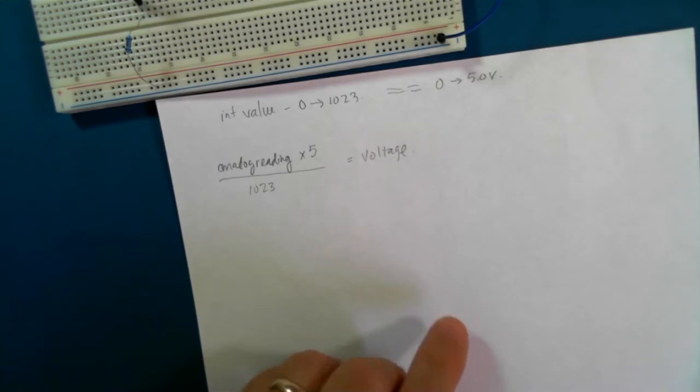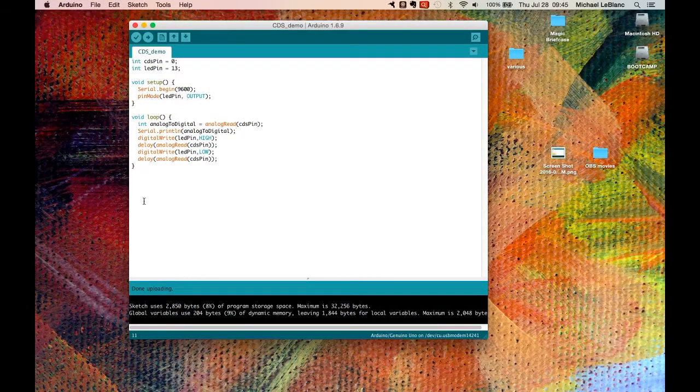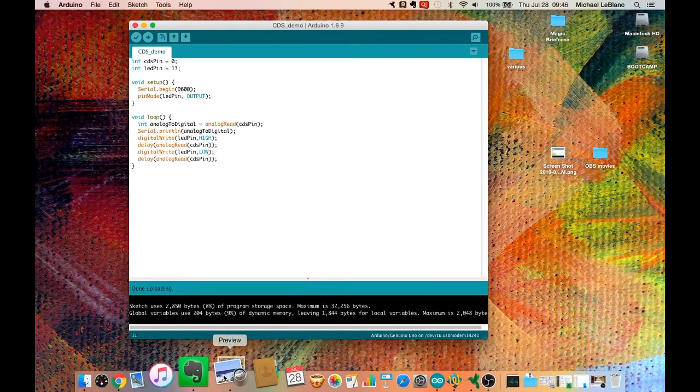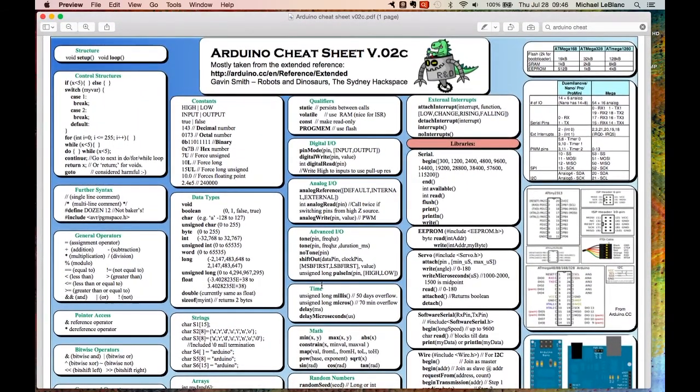The last thing I wanted to talk about was different kinds of variables and constants. So I have our cheat sheet here somewhere. Here it is, here's the Arduino cheat sheet. You can get this from a link on the course website. You should have this, everybody should have one of these. The area that I want to point out is first of all the constants and then we'll get to the data types.